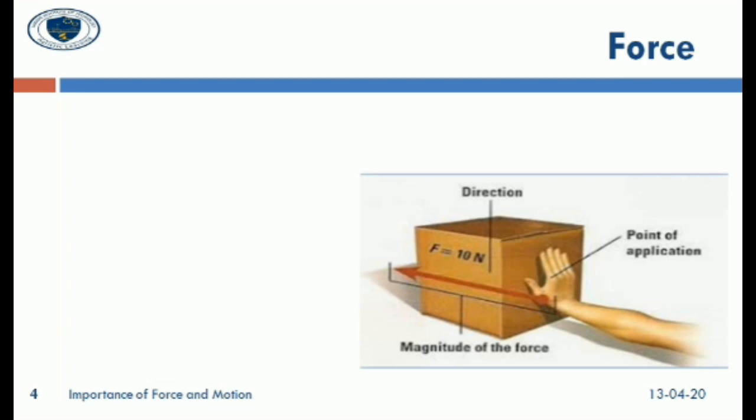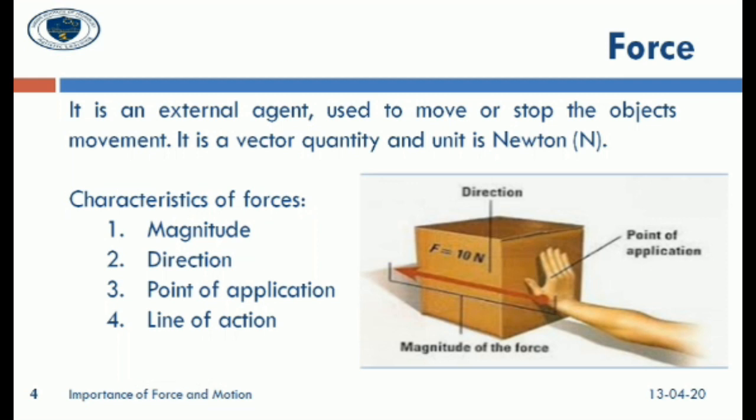What is meant by force? Force is an agent. It is used to move an object or stop an object from its movement. Force has four characteristics: magnitude, direction, point of application, and line of application. Magnitude means quantity. For example, F equals 10 Newton — the 10 Newton is the magnitude. If a man pulls a block from the left-hand side, that left-hand side indicates the direction of motion.